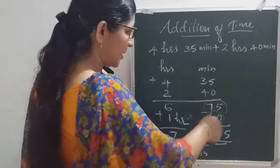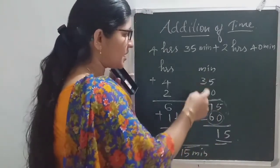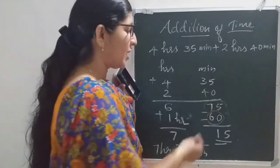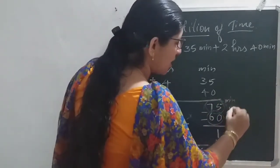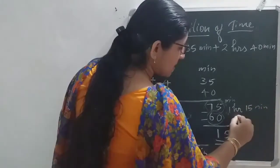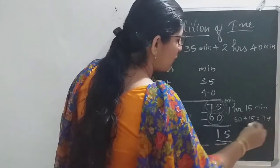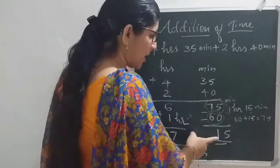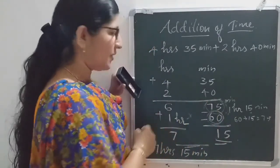Once again — whenever the minutes or seconds in the second place are greater than 60, you need to find out: 75 minutes means that is 1 hour and 15 minutes. 1 hour means 60, and 60 plus 15 is 75. How do you find the answer? By subtracting: 75 minus 60 gives 15. This 60 means 1 hour, and that 1 hour you add with the hours.